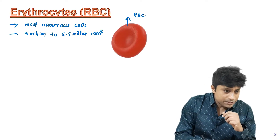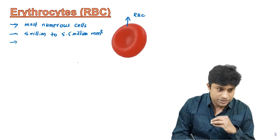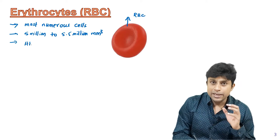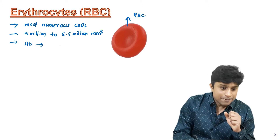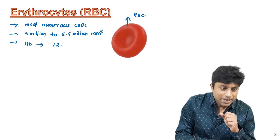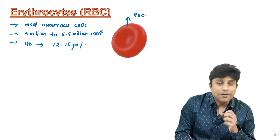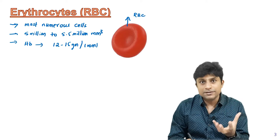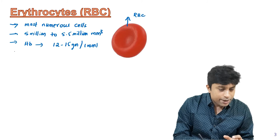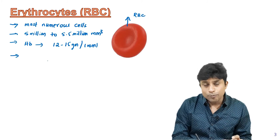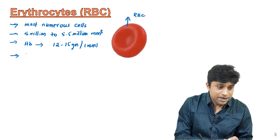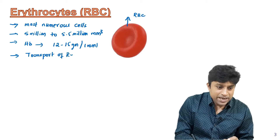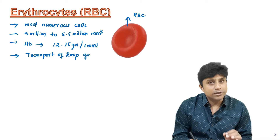RBC are enucleated, biconcave cells. They contain a conjugated protein called hemoglobin. In a normal healthy individual, the amount of hemoglobin is around 12 to 15 grams per 100 ml of blood. Because of the presence of hemoglobin, RBC get their red color. The main role of hemoglobin is transport of respiratory gases.